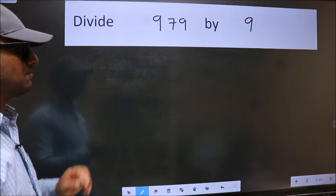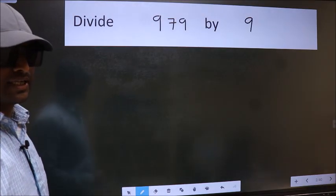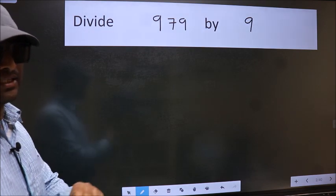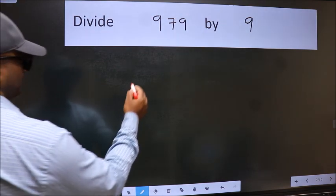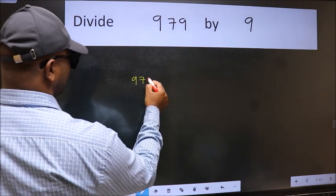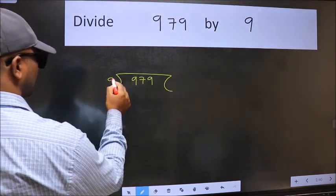Divide 979 by 9. To do this division, we should frame it in this way: 979 here and 9 here.